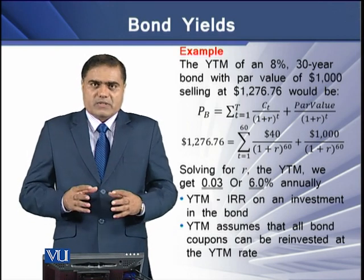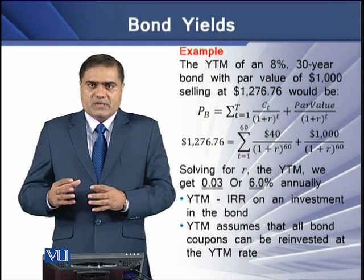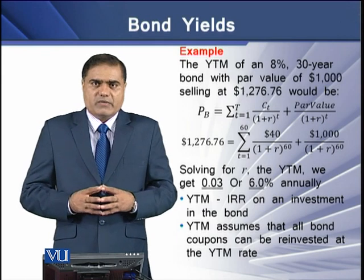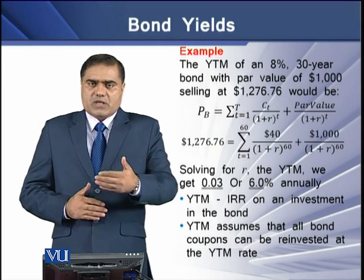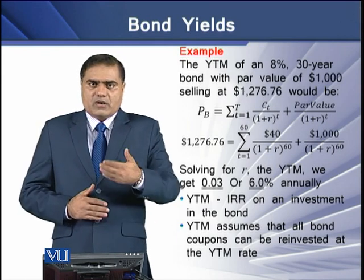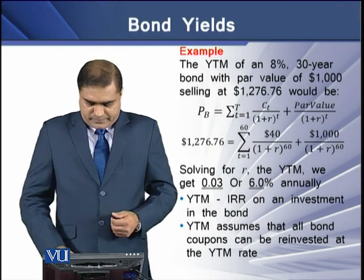YTM assumes that all of the bond's coupon payments are reinvested at the discount rate, or the yield to maturity rate.